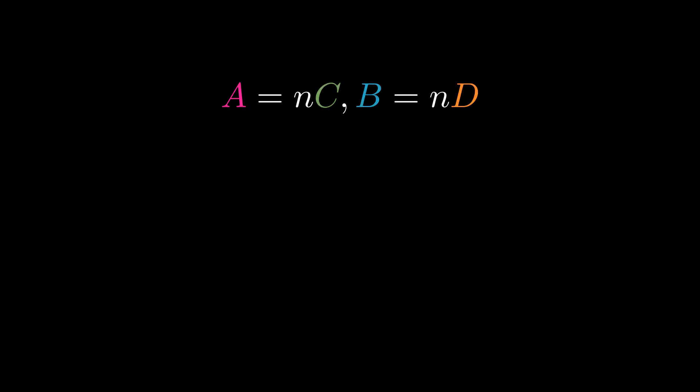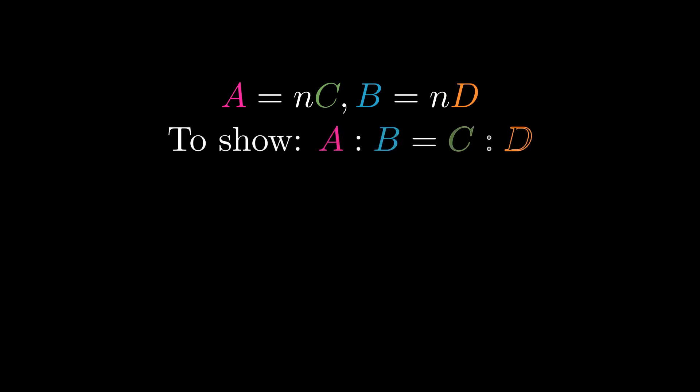Let A and B be equal multiples of C and D respectively. What we want to show is that A to B is proportional to C to D.